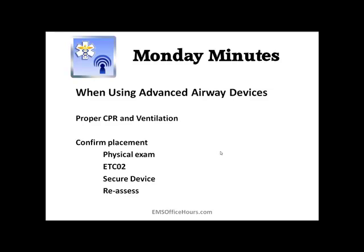Make sure you secure the advanced airway device properly to the patient. When you're moving the patient, doing CPR, and handling all the field activity, the advanced airway device can become dislodged. Continually reassess breath sounds, chest rise, patient skin color, and end-tidal CO2. Make sure the tube doesn't shift — for example, going deeper into the right mainstem bronchus, which would give you different end-tidal readings and different findings.